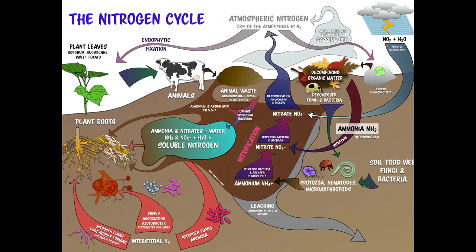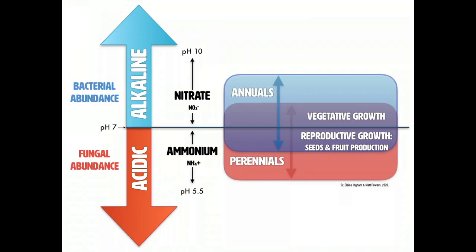So 80% of the ions absorbed by plant roots in the vegetative state while it's growing are nitrogen, and then it drops down to 10 to 20% during reproductive. That implies it could be 80 to 90%, meaning the majority of the time the importance of nitrogen is at the growth stage.